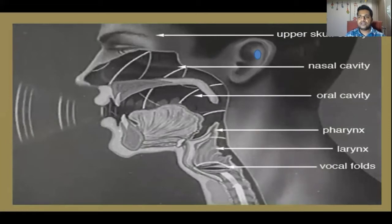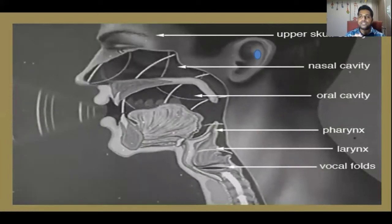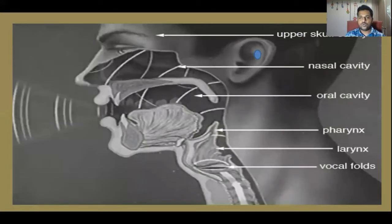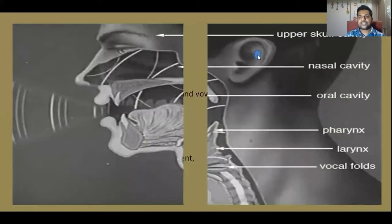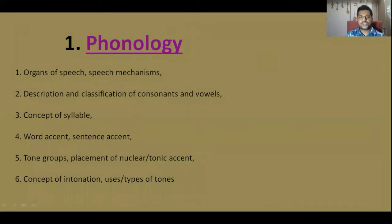You will be learning about the speech mechanism and how to use standard pronunciation, that is BBC English. This section covers: organs of speech, speech mechanism, description and classification of consonants and vowels, concept of syllable, word accent, sentence accent, tone groups, placement of nuclear tonic accent, concept of intonation, uses, and types of tones.